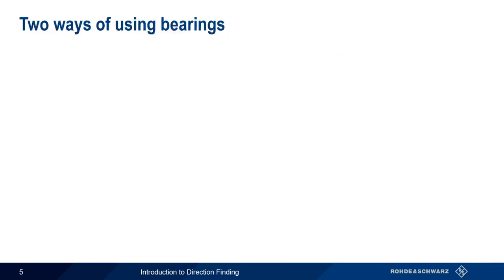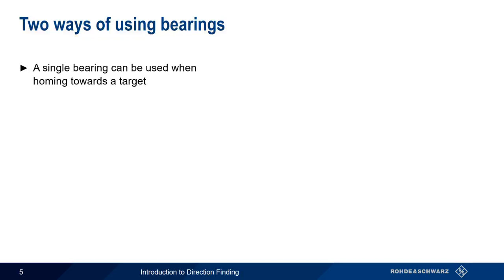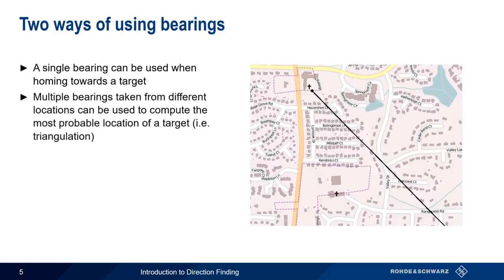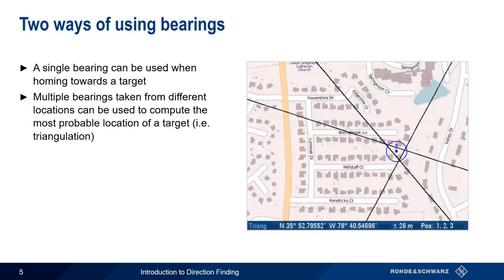Bearings, which represent the direction towards the source, can be used in two main ways. A single bearing provides a direction, but no distance information, so the main application of a single bearing is homing towards a target — we simply follow the bearing until it leads us to the source. On the other hand, if we're able to take bearings from multiple locations, these can be plotted together to compute the most probable location of the target, a process often called triangulation.